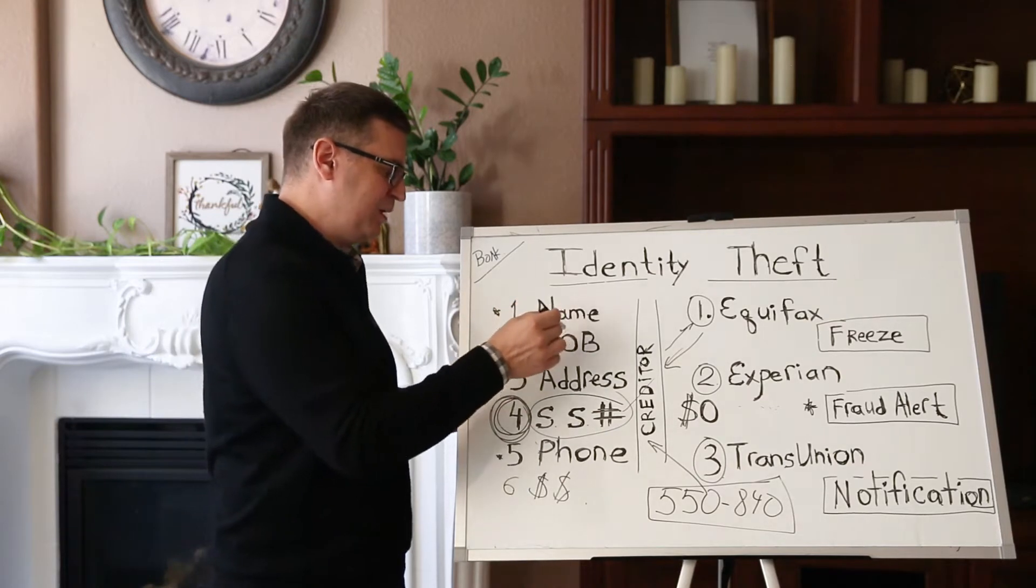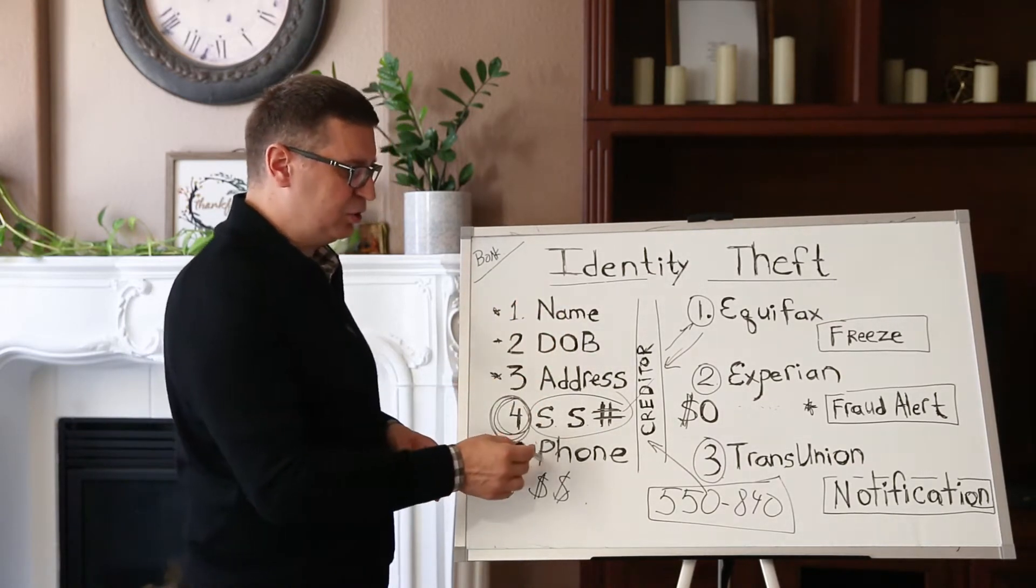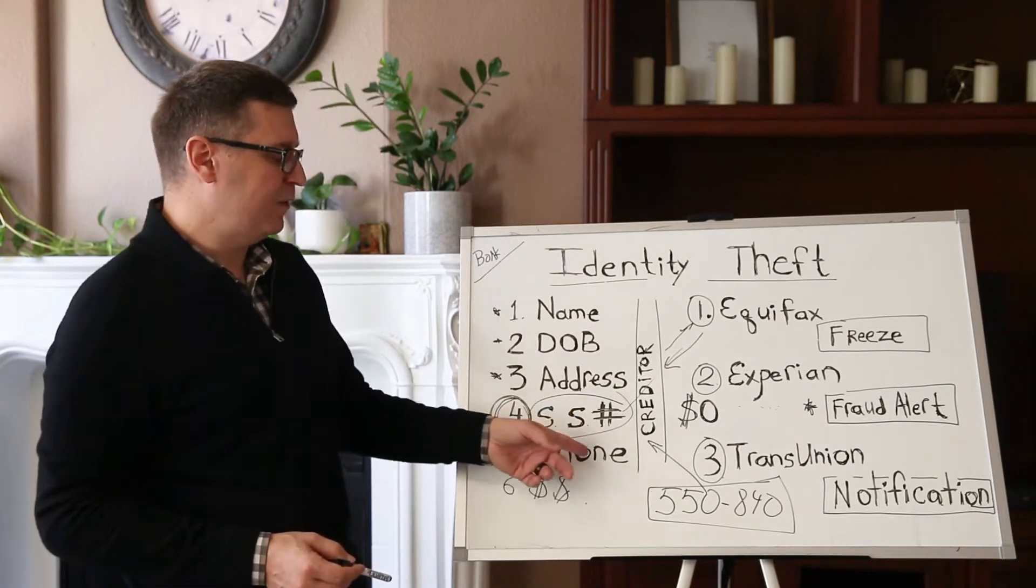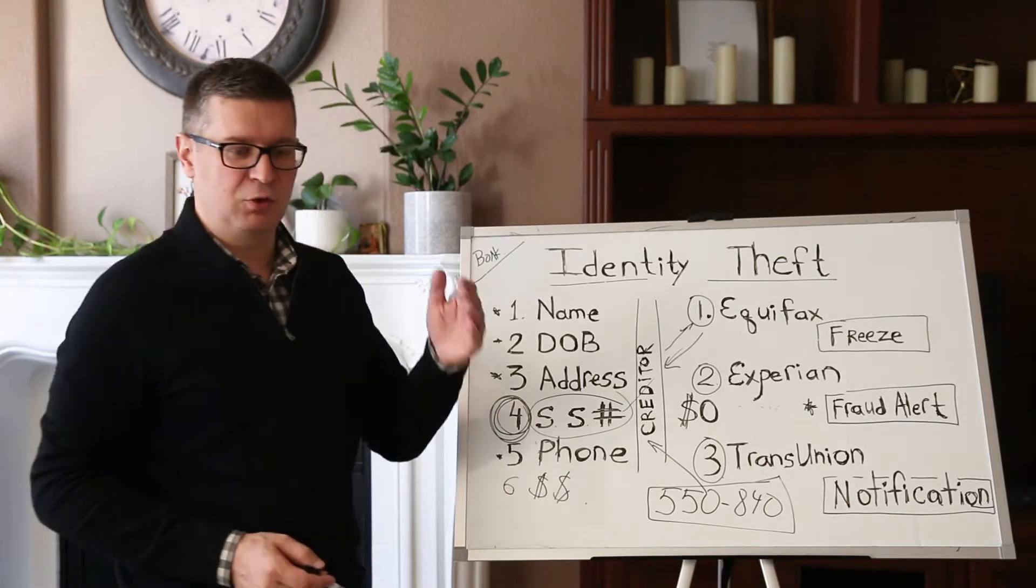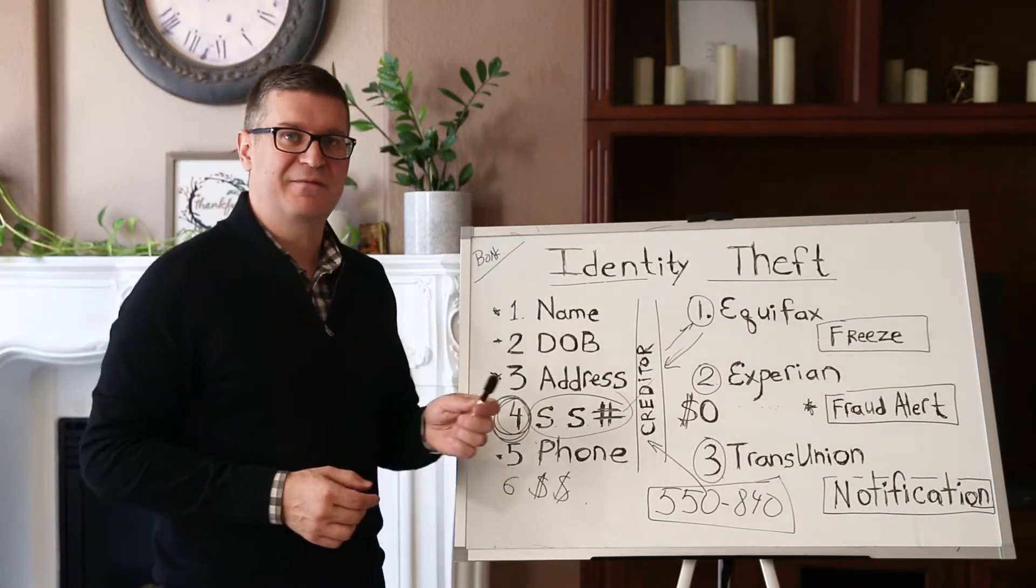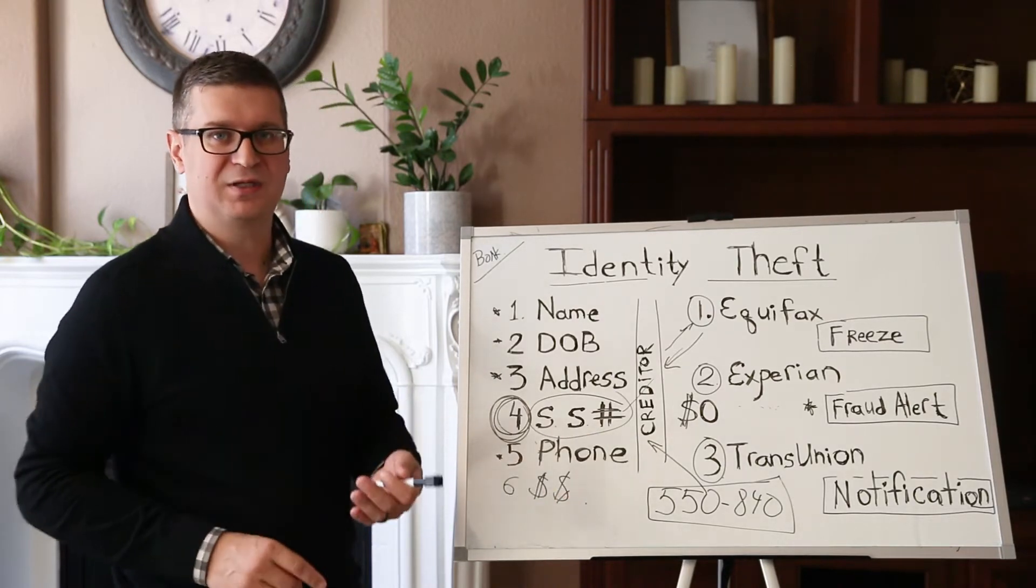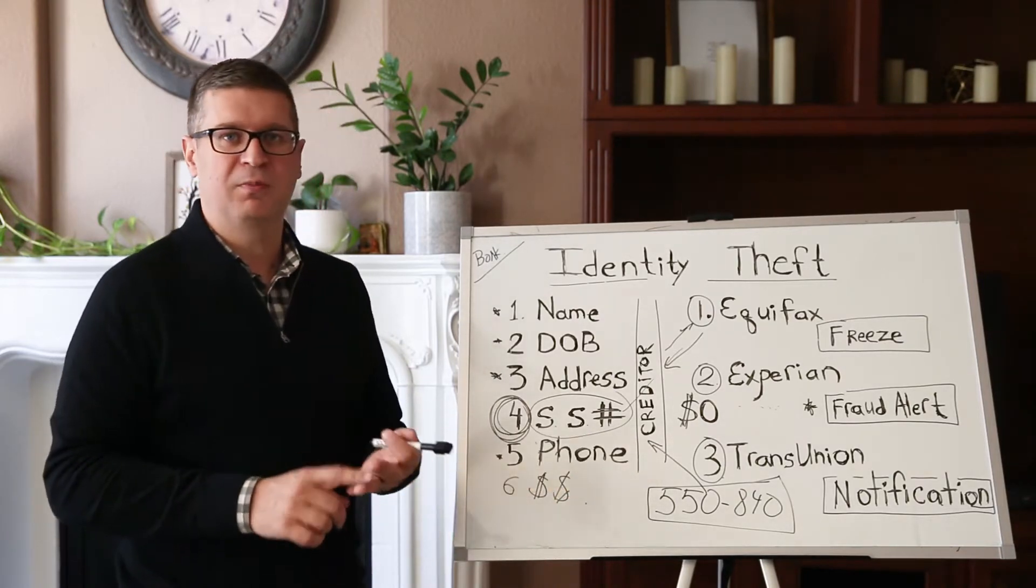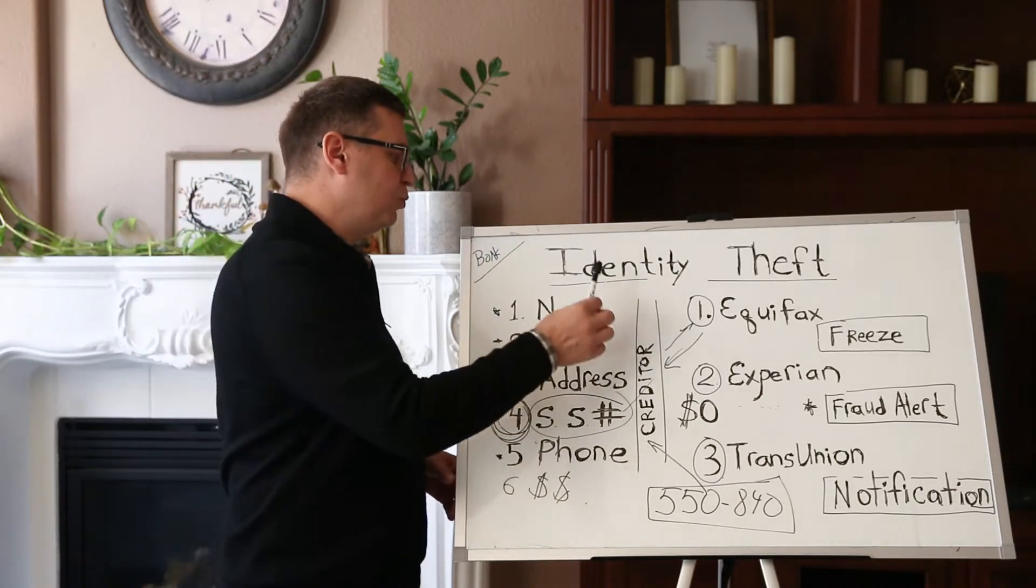They're getting our name, date of birth, address, social security, and they can actually use their own phone number. They're using this to apply for credit. When they go online they can apply for a credit card, or they can make a fake driver's license and go to stores like Home Depot or Lowe's and just apply for credit and buy a whole bunch of power tools or appliances.